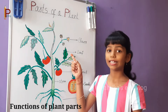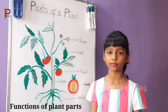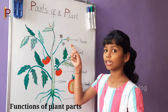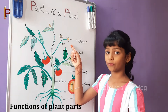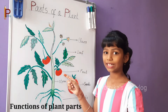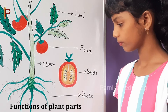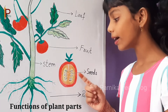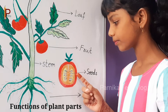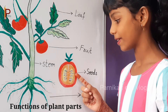Leaves collect sunlight and make food for the plant. Flowers help in producing fruits. Fruits have seeds inside them — the seeds are inside the fruit. New plants grow from the seeds.